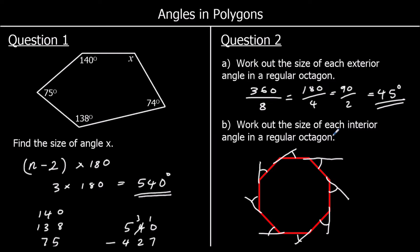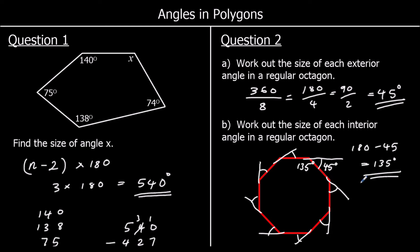Part B: work out the size of an interior angle in a regular octagon. An interior angle and an exterior angle are on a straight line, so 180 take away 45 is 135 degrees. So every angle in the regular octagon is 135 degrees. Regular shapes have the same angles and the same lengths — all the angles are equal and all the lengths are equal — so they are all 135 degrees.